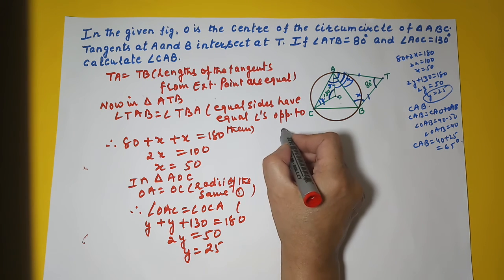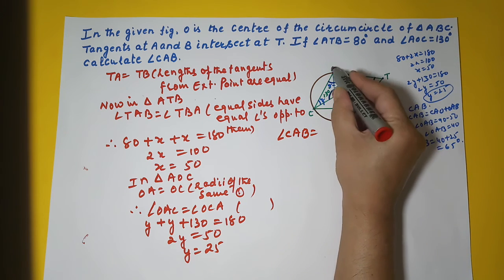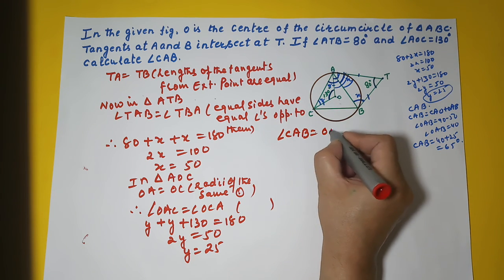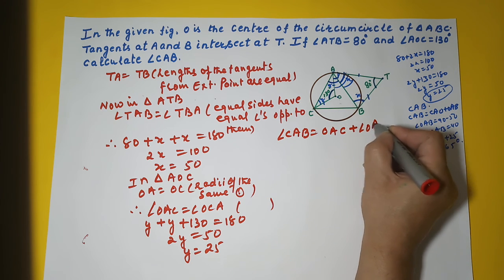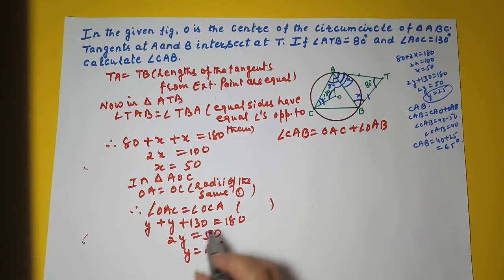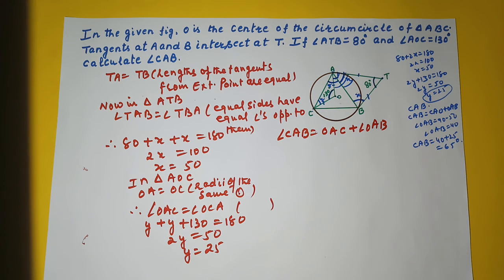Now you need to calculate angle CAB, which is equal to OAC plus angle OAB. OAC you have 25, OAC is your Y which is 25.